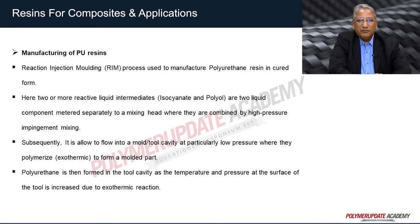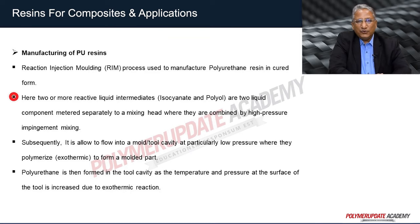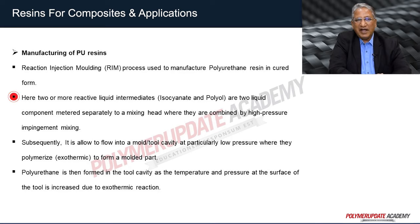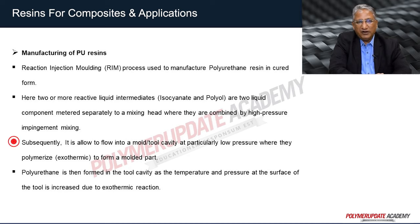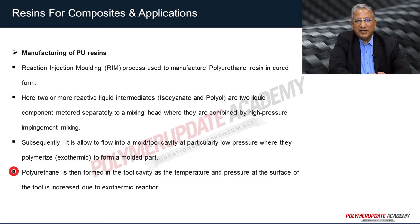Reaction injection molding (RIM) is used to manufacture polyurethane resin in a cured form. Two or more reactive intermediates — isocyanates and polyols — are two liquid components metered separately to a mixing head where they are combined by high pressure impingement mixing. Subsequently, the mixture flows into a mold or tool cavity at low pressure where they polymerize by exothermic reaction to form a molded part. Polyurethane is formed in the tool cavity as temperature and pressure at the surface increase due to the exothermic reaction.